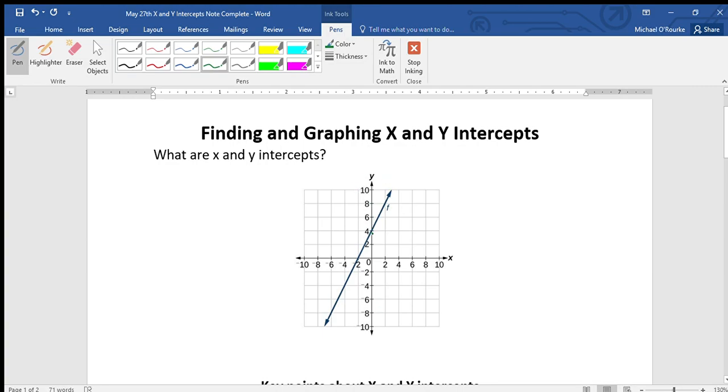And the x-intercept? Well, if the y-intercept is when it crosses the y-axis, logic might tell you that the x-intercept is when it crosses the x-axis. So in this case, x is negative 2.